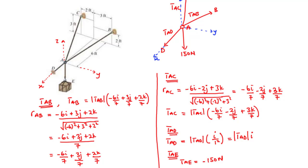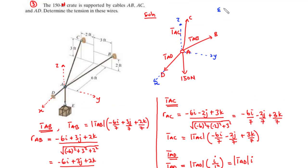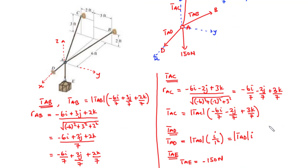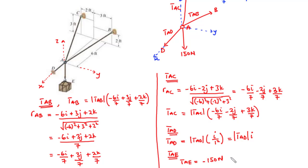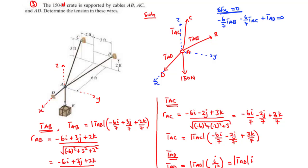Now we add up all the X, Y, and Z components using the equations of equilibrium to solve for TAB, TAC, and TAD. For the summation of forces along the X axis: negative 6 over 7 TAB, minus 6 over 7 TAC, plus TAD equals 0. Since the weight force is directed along the Z axis, it has no X component. Transposing TAD to the right-hand side gives: negative 6 over 7 TAB minus 6 over 7 TAC equals negative TAD. We call this Equation 1.